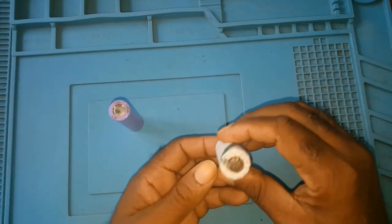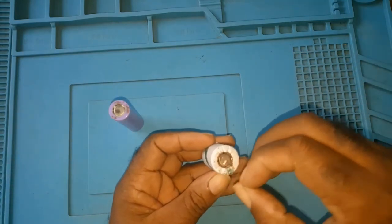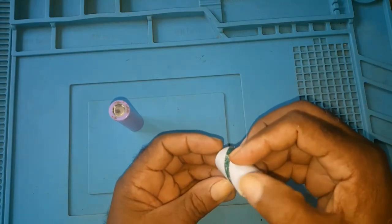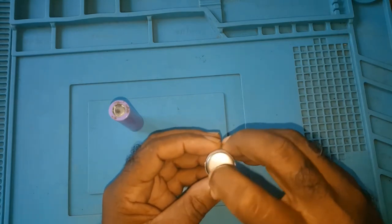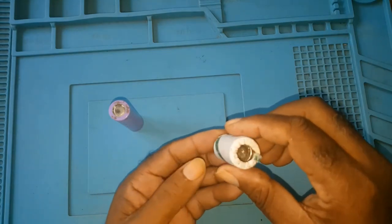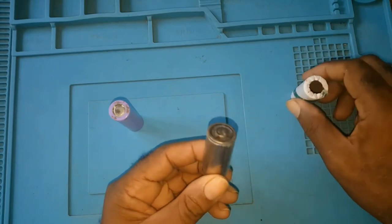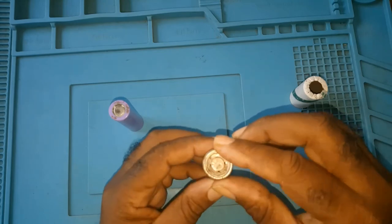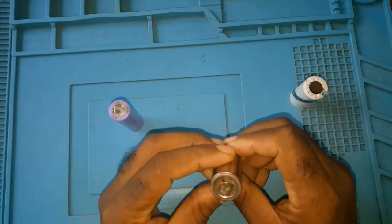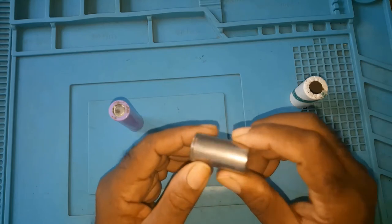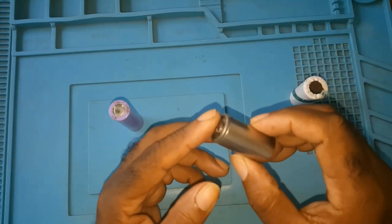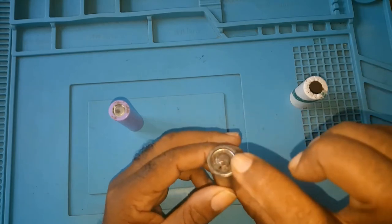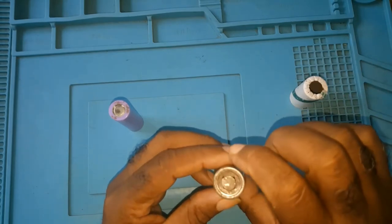But when you're building your battery bank, this is positive, this is negative. Now if you remove the sleeve, this whole thing here is negative. Now I've discharged these batteries - they have, well I won't say I've discharged them, they are not good anymore. They have no voltage in them whatsoever.